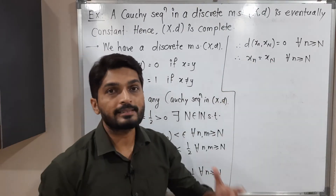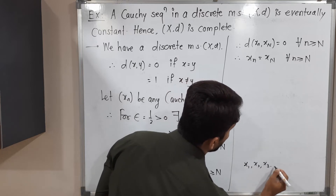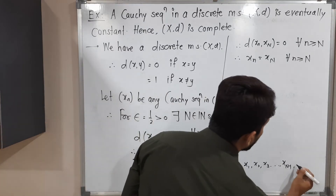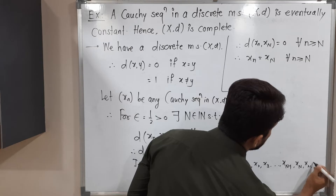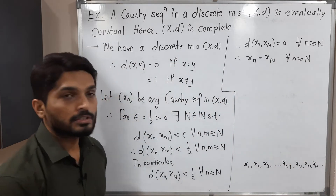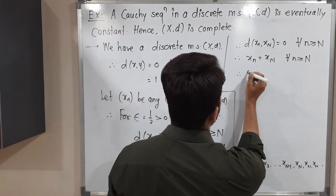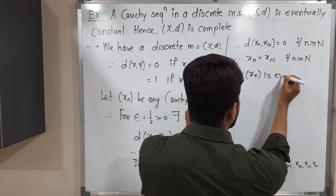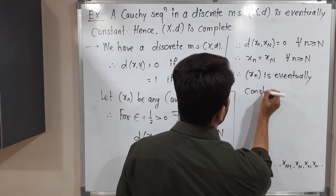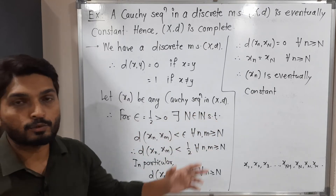This means if small n ≥ capital N, all x_n will equal x_N. The sequence looks like x_1, x_2, x_3, and so on up to x_{N-1} — those terms can be different — but after the Nth term we will have just x_N, x_N, x_N. All remaining terms are equal to x_N, so this is called an eventually constant sequence. Therefore x_n is eventually constant. We started with any arbitrary Cauchy sequence and proved it is eventually constant.